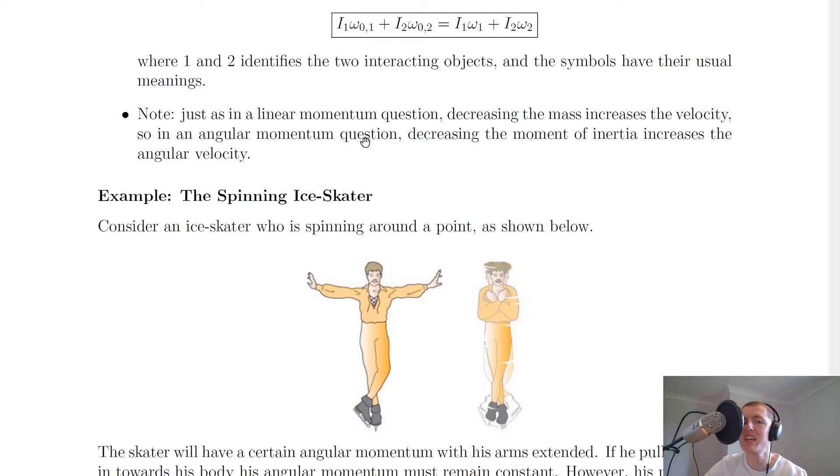Then it says, note, just as in a linear momentum question, decreasing the mass increases the velocity. Remember at a higher level when we said that total momentum before must equal total momentum after, this meant that if we decreased the mass in a specific case, then we had to increase the velocity to keep the linear momentum the same, because otherwise it would change since p equals mv.